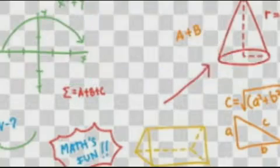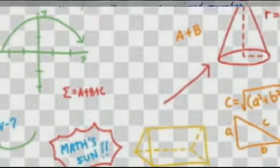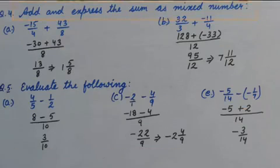Good morning students. Let's continue exercise 6A. Question number 4. Add and express the sum as mixed number. Part a: minus 15 upon 4 plus 43 upon 8.